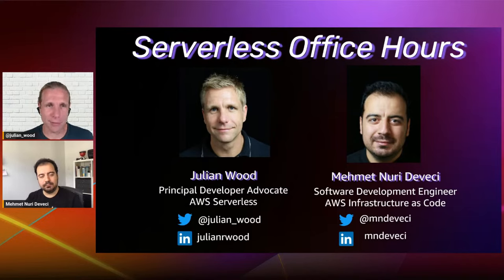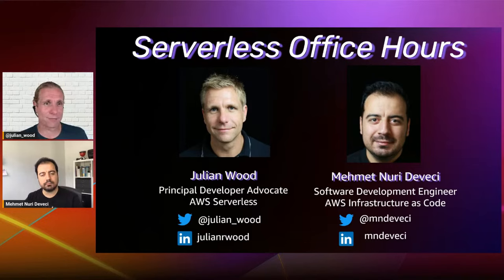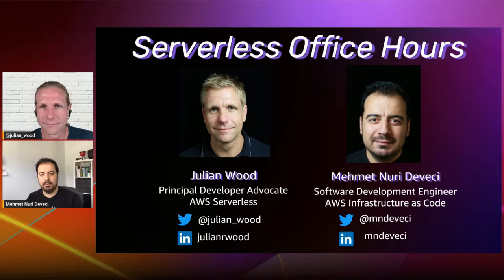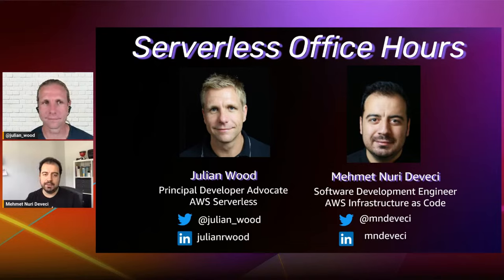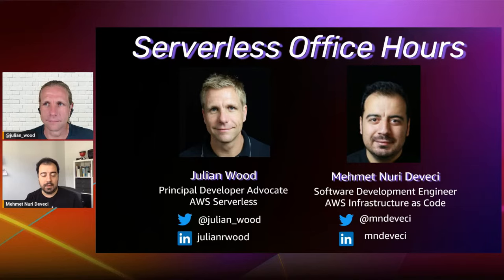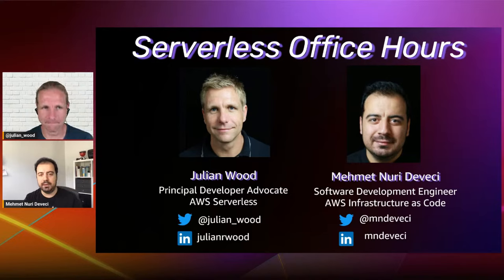So you're a software development engineer, actually building stuff, and you work within AWS in the AWS infrastructure as code team. What is the AWS infrastructure as code team? My name is Mehmet Nuri Devici. I'm an SDE in the infrastructure as code team. My team is mainly working on the AWS SAM CLI — a command line utility for developers to build, test, and deploy their serverless applications. We also have the SAM team managing the template part, the CloudFormation macro service transform, and the App Composer team. We focus on developer productivity for serverless applications.